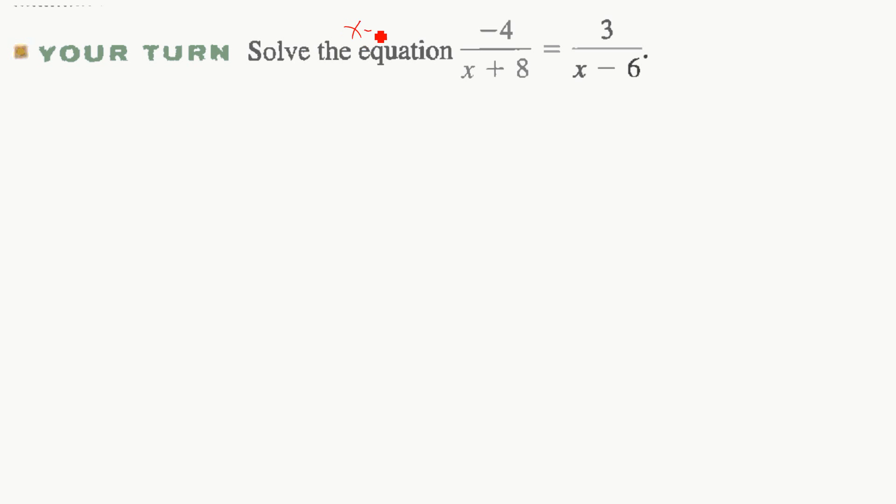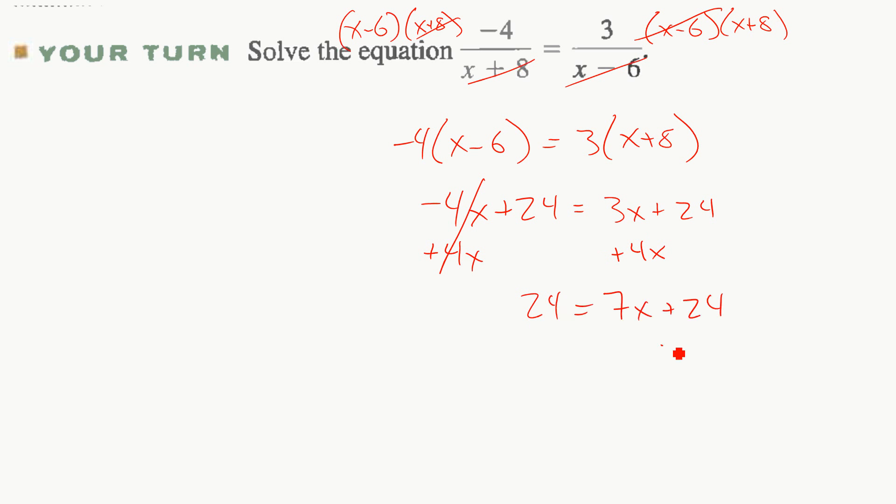Your turn. All right, so x minus 6, x plus 8. Cancel. We'll have negative 4 times x minus 6 equals 3 times x plus 8. Negative 4x plus 24 equals 3x plus 24. Let's add 4x to both sides. And so we'll have 24 equals 7x plus 24. Let's subtract 24 from both sides. And we'll have 0 equals 7x. Divide by 7. 0 equals x.